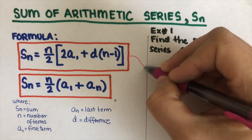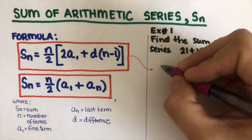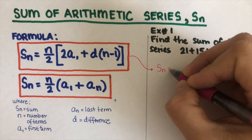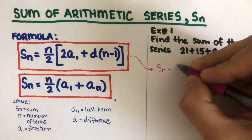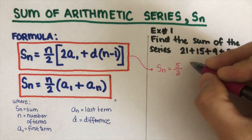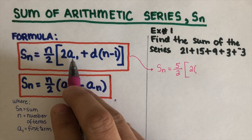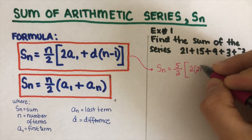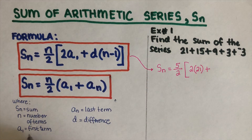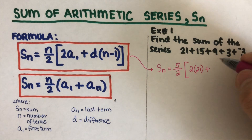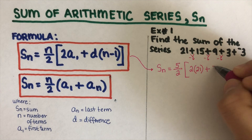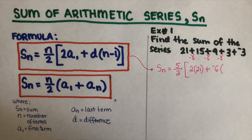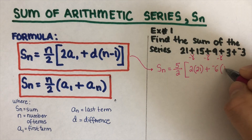Let's start with the first equation. S of n equals n over 2, bracket 2 times a1 plus d times (n minus 1). The n refers to the number of terms — counting: one, two, three, four, five — so n is 5. The first term a1 is 21. The common difference d is negative 6, because 21 goes to 15, decreasing by 6 each time. So n minus 1 is 5 minus 1, which is 4.